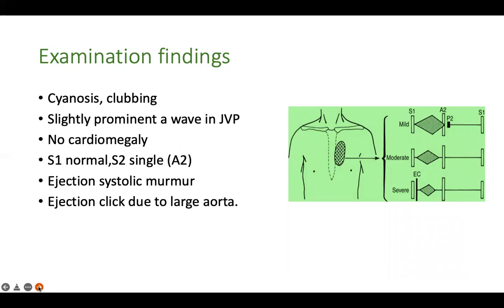JVP may be seen, and the JVP A wave may be prominent in some patients, though in small children it is difficult to assess. On auscultation, S1 is normal and S2 appears single — what you hear is mainly A2. In the pulmonary area, that is the left parasternal area, there is an ejection systolic murmur whose duration is inversely related to the severity of pulmonary stenosis. Because the aorta is large and receiving blood from both ventricles, ejection clicks are also often heard.